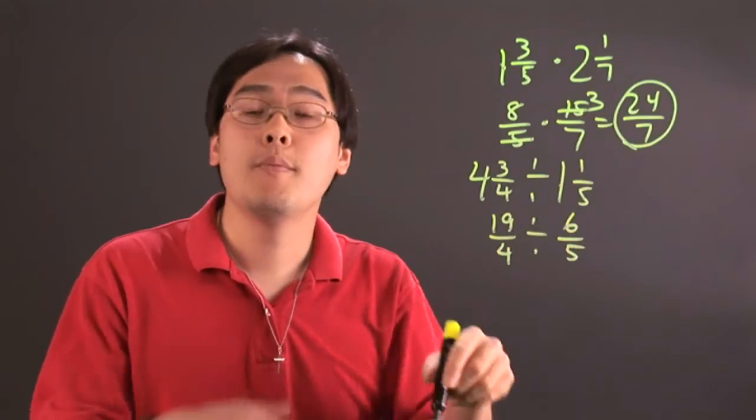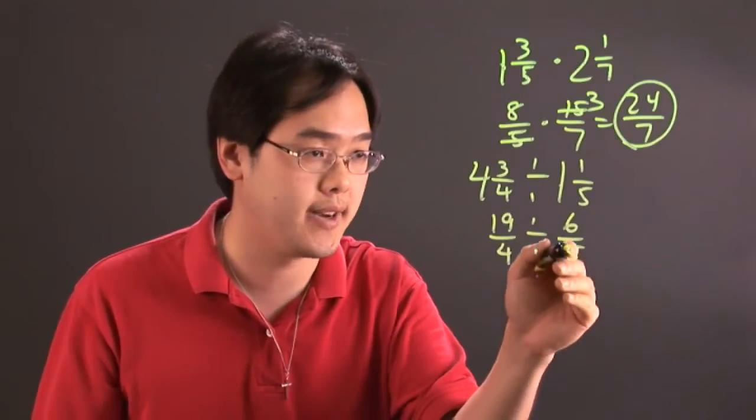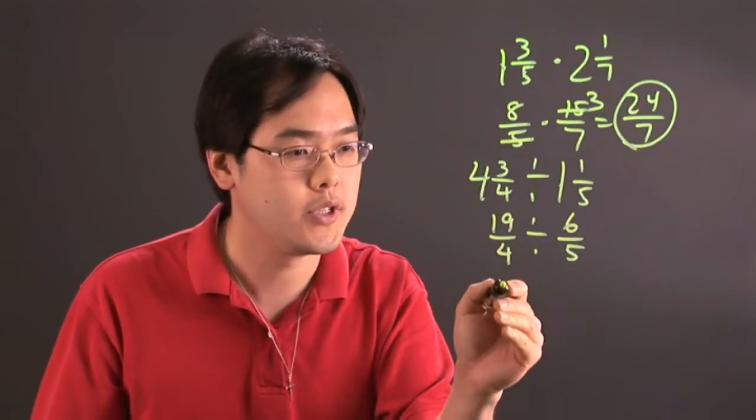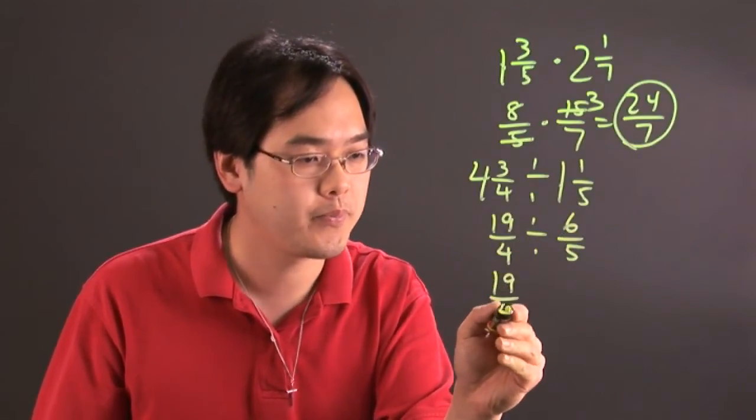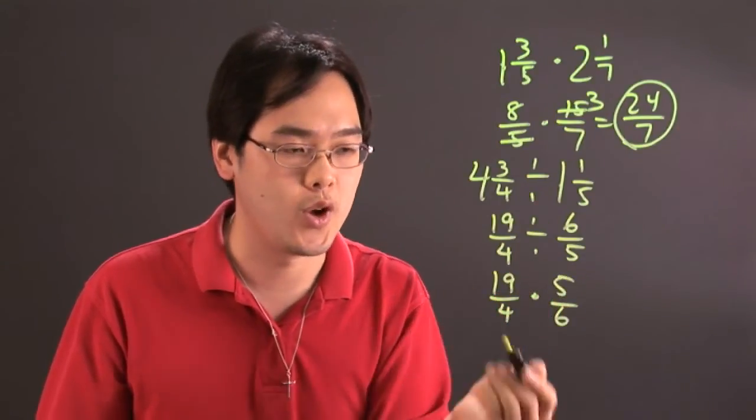But as you know, before you divide by any fraction, you have to multiply by the reciprocal. So you've got to flip this six over five and turn it into a multiplication problem. So this will be nineteen over four times five over six, and then go from there.